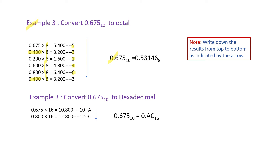Let us look at the next example: converting 0.675 decimal to hexadecimal. We multiply by 16. So, 0.675 × 16 = 10.800; the integer part is 10, and the hexadecimal equivalent of 10 is A. Then 0.800 × 16 = 12.800; the integer part is 12, and the hexadecimal equivalent of 12 is C. We stop here because the fractional part is repeating. So, 0.675 decimal is equal to 0.AC in hexadecimal.